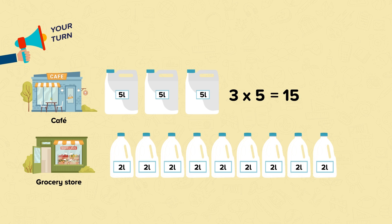Well done if you remembered to include the liters in your answer. Now for the grocery store. The grocery store orders 9 2-liter bottles of milk or 9 lots of 2 liters. 9 times 2 equals 18. So the grocery store orders 18 liters. Well done if you got both of those correct.